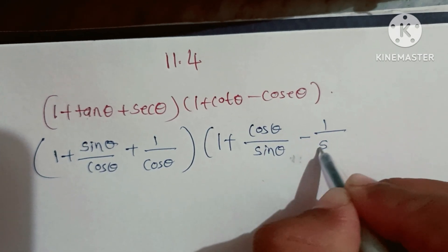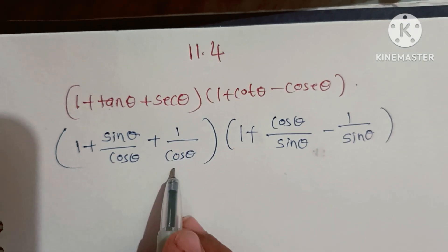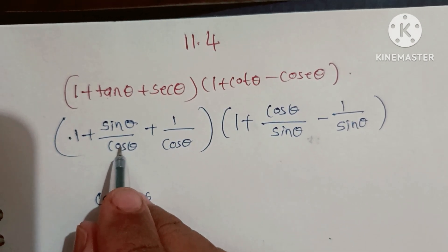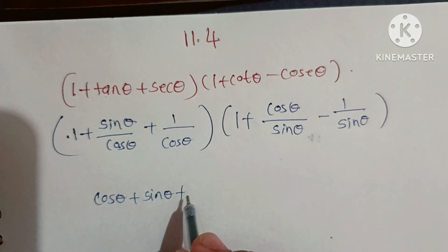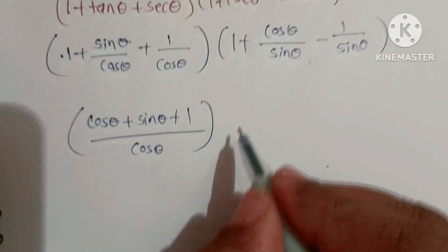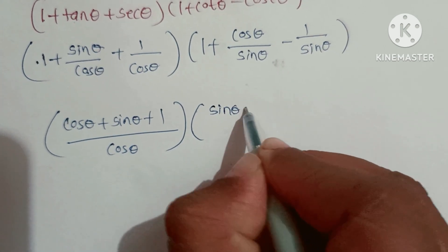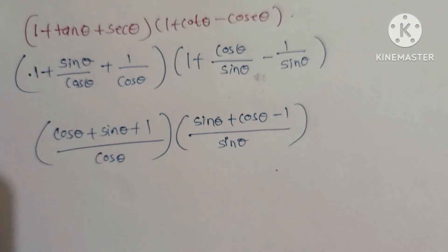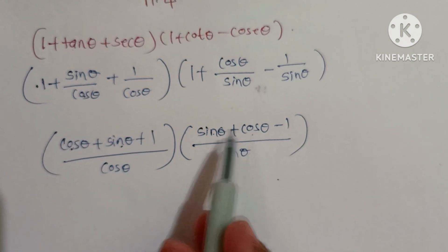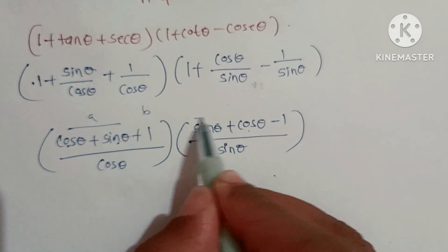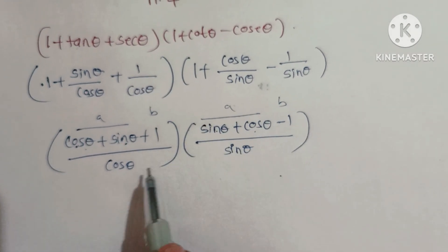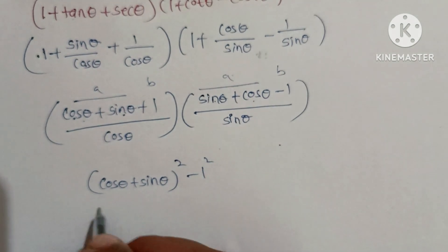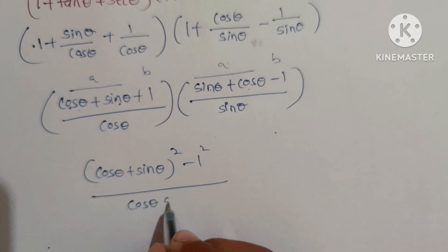Now take LCM as cosθ·sinθ. So numerator becomes: cosθ + sinθ + 1 all over cosθ·sinθ, multiplied by cosθ + sinθ - 1 over sinθ. Observe that (sinθ + cosθ + 1) and (sinθ + cosθ - 1) form an (a+b)(a-b) pattern, giving (cosθ + sinθ)² - 1² over cosθ·sinθ.